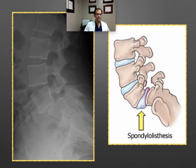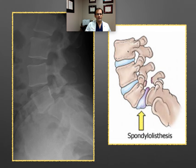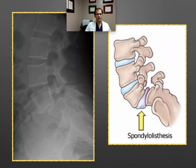Here's an x-ray, and I'll walk you through this. We can see bone, disc, bone, disc in sequence. The nerve roots are exiting the spinal canal through these windows right here. We're looking from the side. And you can see here the slip — that's the spondylolisthesis.